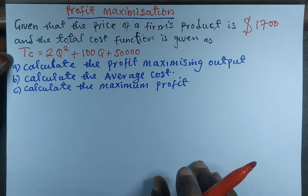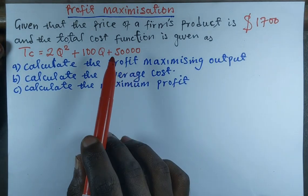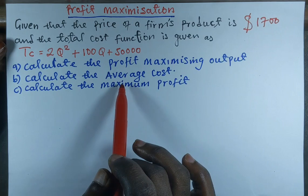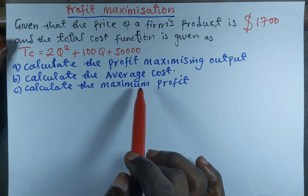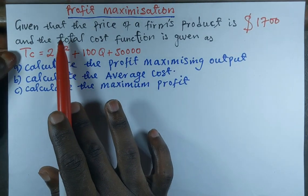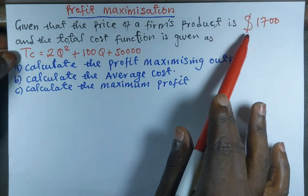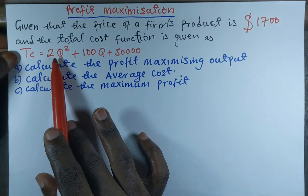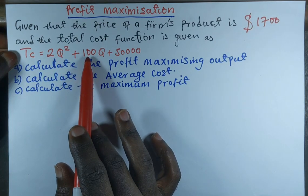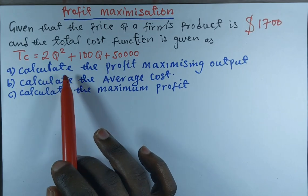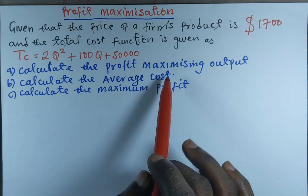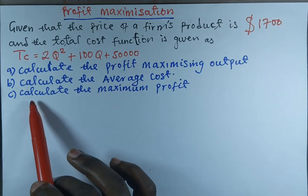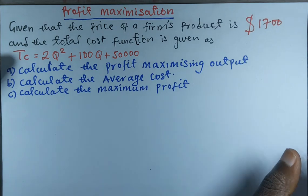Welcome to another session of Sam's Economics Tutorials. In today's video I will be showing you how to calculate the profit maximization output, calculate the average cost, and lastly calculate the maximum profit. We are going to take this question: the price of a firm's product is $1,700 US dollars and the total cost function is given as TC = 2Q² + 100Q + 50,000.